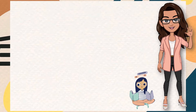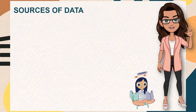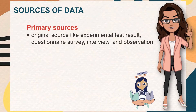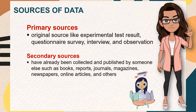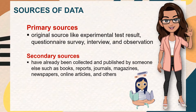According to Faltago et al. 2017, in conducting research you may use various sources of data. First is primary sources — they provide raw data selected from the original source like experimental test results, questionnaire surveys, interviews, and observation. For secondary sources, these are data already collected and published by someone else, such as books, reports, journals, magazines, newspapers, online articles, and others.